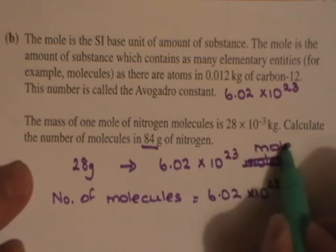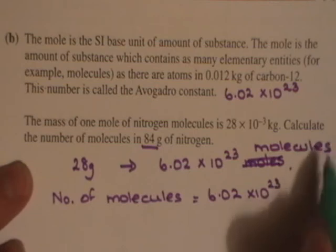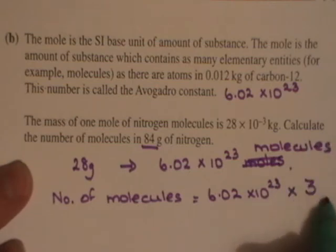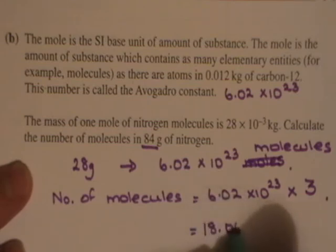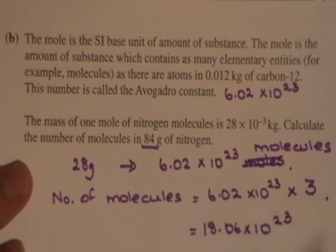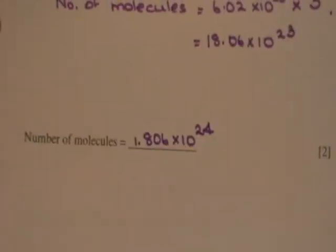And then you're multiplying this by 3, and you get 18.06 by 10 to the 23. 3 times 6.02, and that's 1.806 by 10 to the 24. So that's how many molecules you would find in 84 grams of nitrogen.